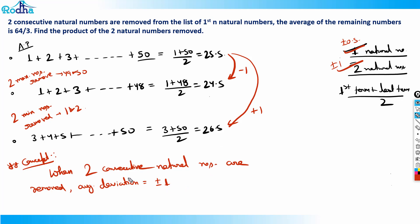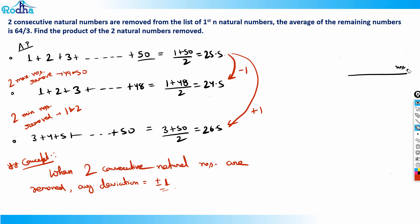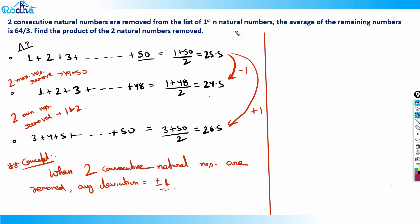Now let's apply this to solve the actual question. Two consecutive natural numbers are removed from the list of first n natural numbers and the average of the remaining numbers is 64/3. So the average of remaining numbers is 64/3, which equals approximately 21.33.